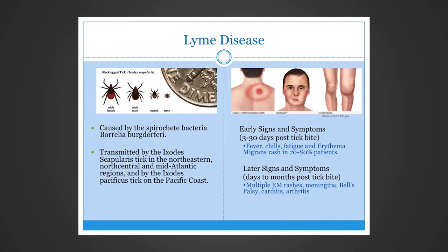Lyme disease is caused by the spirochete bacteria Borrelia burgdorferi, and it's transmitted by the Ixodes scapularis, or black-legged tick, in the northeast, north-central, and mid-Atlantic regions of the U.S. In the Pacific coast, it's transmitted by the Ixodes pacificus tick, and in Europe by a different tick. Early signs and symptoms occur about three to thirty days after the tick bite, and include fever, chills, fatigue, and the bullseye erythema migrans rash in about 70 to 80 percent of patients.